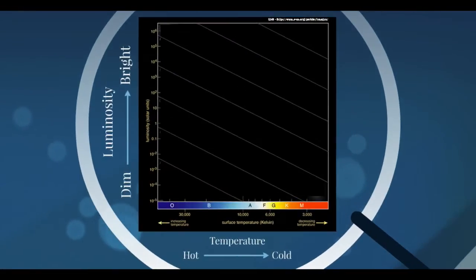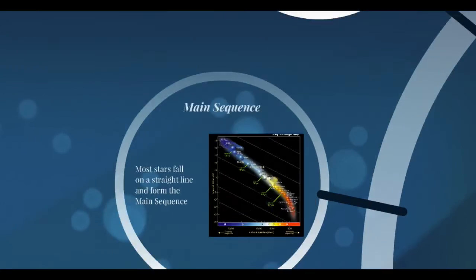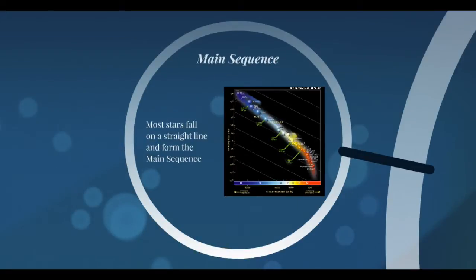When we look at this HR diagram, we plot luminosity on the vertical axis going from dim to bright, and we plot temperature on the horizontal axis going from spectral class O to spectral class M. Spectral class O are hotter, bluer stars, and spectral class M are the cooler yellow and red stars. That means the horizontal axis goes from hot to cold, which may seem counterintuitive.